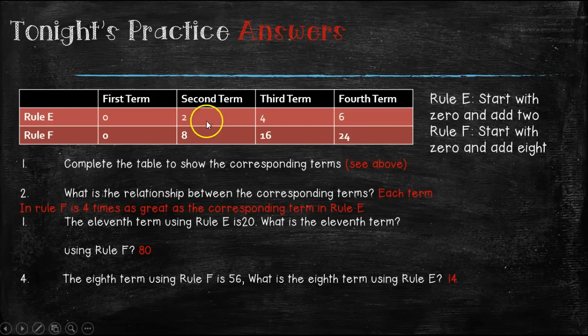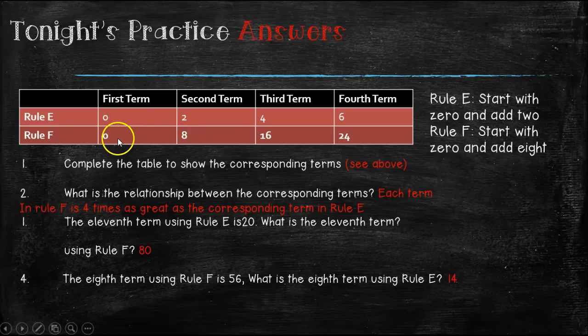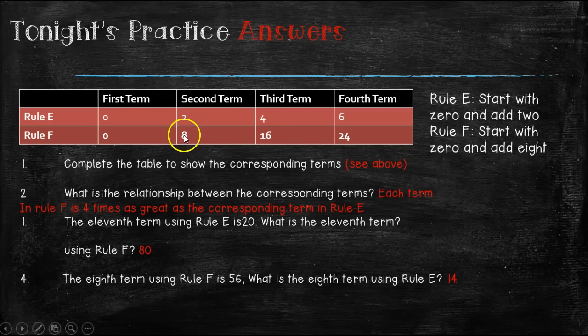So what is the relationship between the corresponding terms? In rule F, it's four times as great as the corresponding term in rule E. In other words, eight divided by four is two, 16 divided by four is four, and 24 divided by four is six.